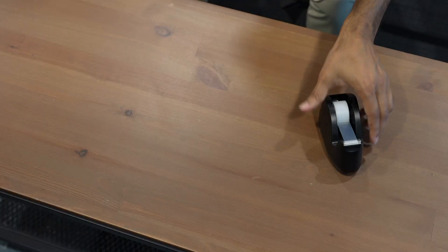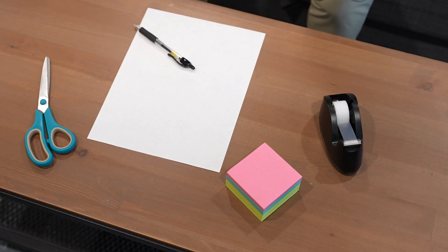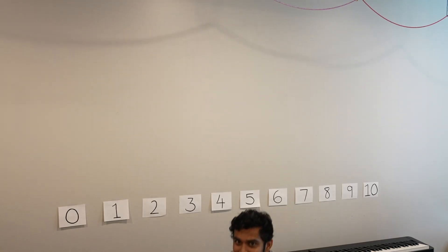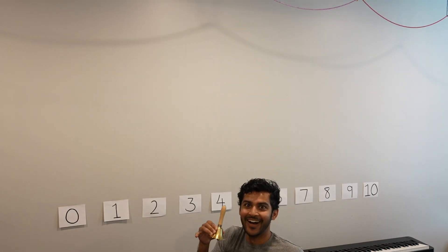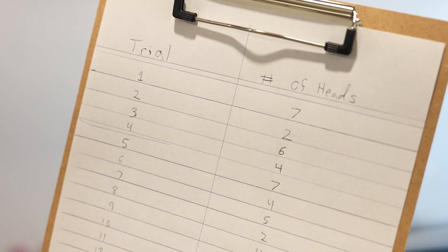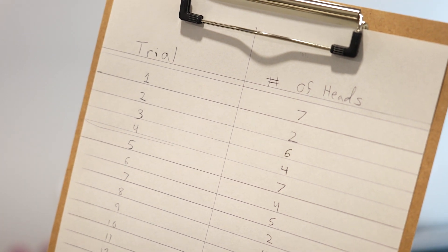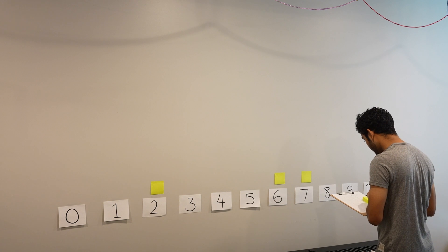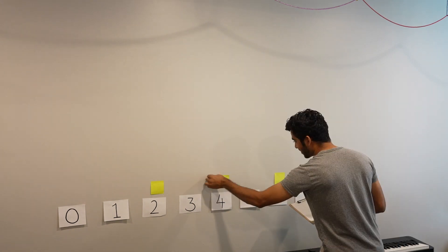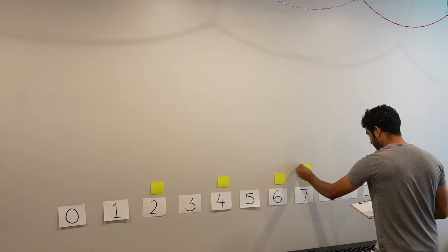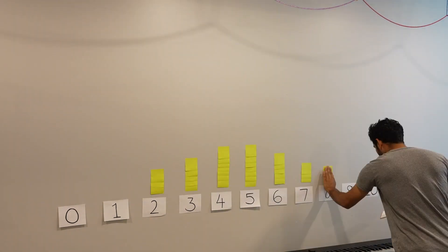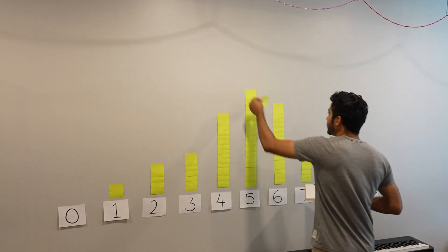Once you have the numbers, it's time to make the bell curve. Grab these materials, and a wall. Lay out the numbers 0 through 10 horizontally. Now look at the data you collected. For each trial of 10 flips, place a sticky note above the number that landed heads. Stack any repeats. Over time, you should see a bell-shaped curve start to form.